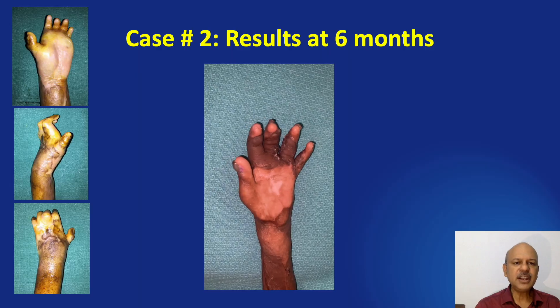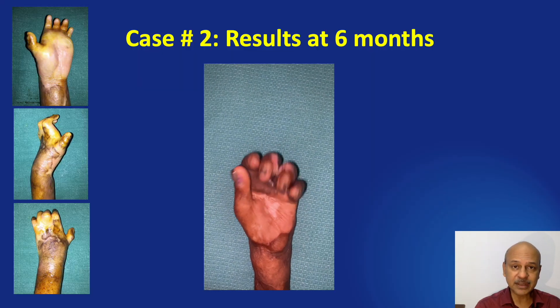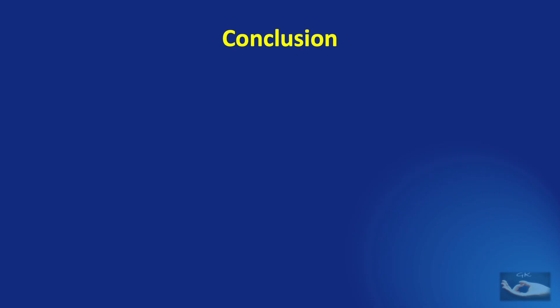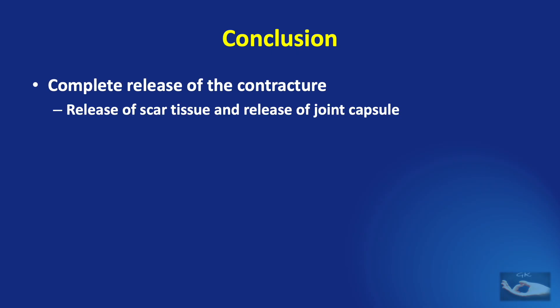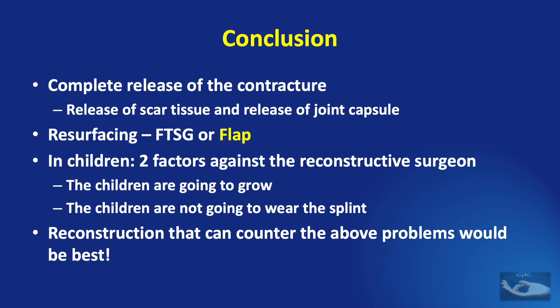Finally, a syndactyly release between the middle and ring fingers was done. The result at six months showed good functional improvement — cosmetically not very acceptable but function-wise the child is able to do all the work required. When dealing with management of post-burn contractures in children, it is important to not only completely release the skin contracture but also release the scar tissue and the joint capsule if necessary. Resurfacing with a full thickness skin graft or flap cover is required, with flap cover being the slightly better option because in children two factors work against the reconstructive surgeon: the children are going to grow, and the children are not going to wear the splint.